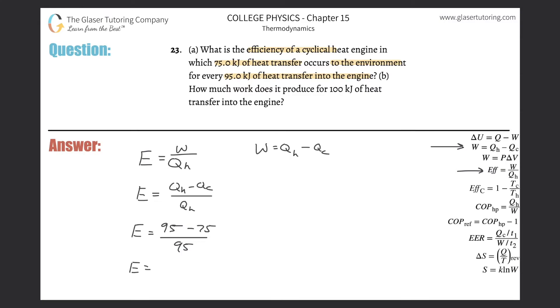Let's calculate the efficiency. So this is basically 95 minus 75, which is 20, and then divide that by 95. So this is about 21%, or in decimal form, 0.211. All right, that takes care of letter A.